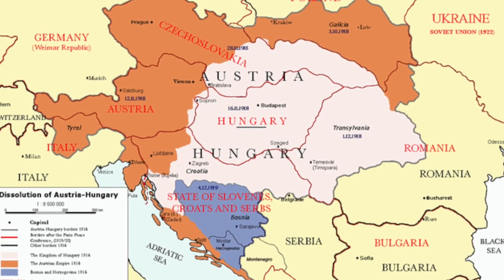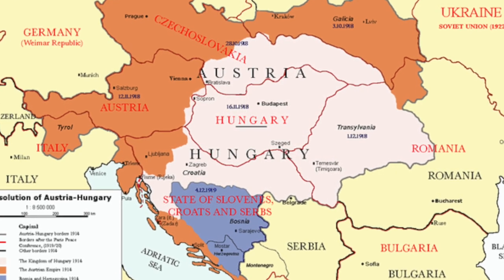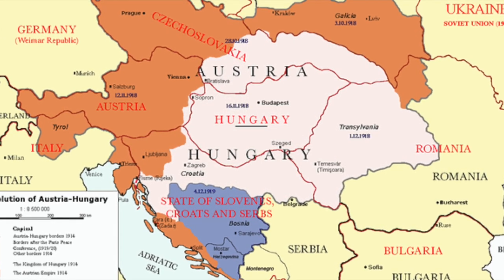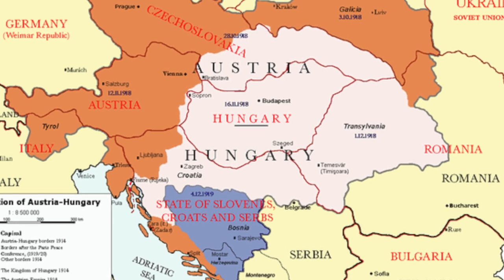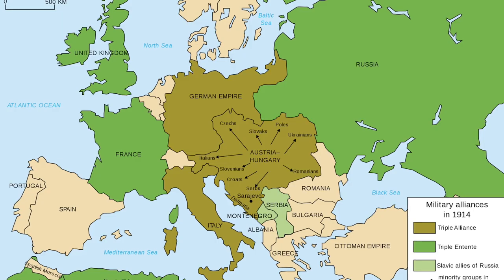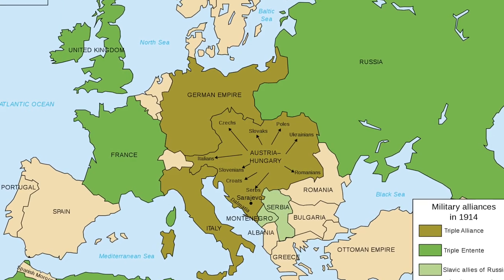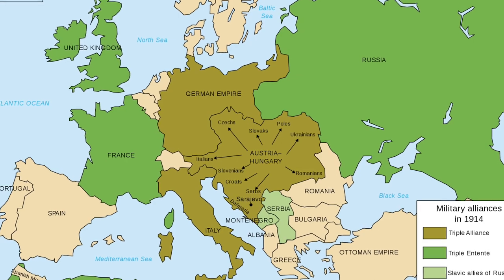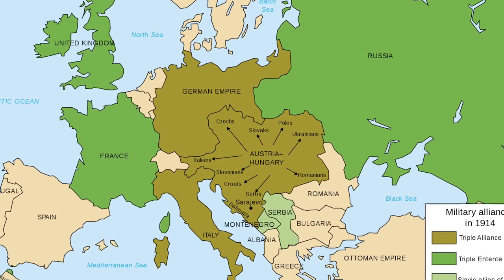Firstly we need to know that the Balkans are in Eastern Europe and most of the Balkans were occupied by the Slavs, in which Serbia was the largest state. They aimed to unite all the states under a Serb leadership.